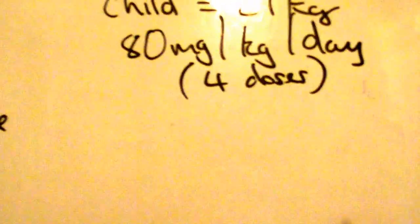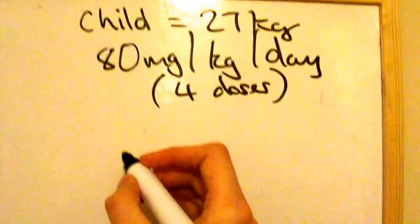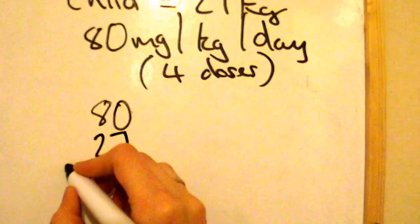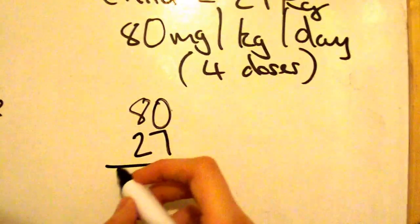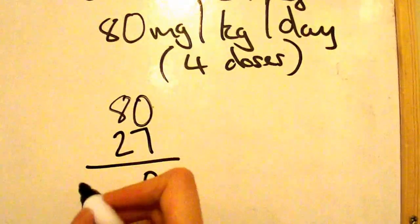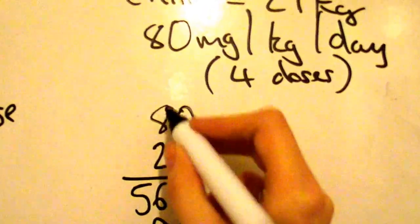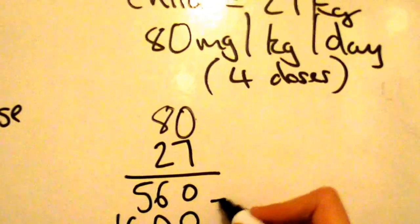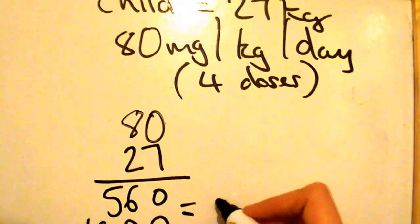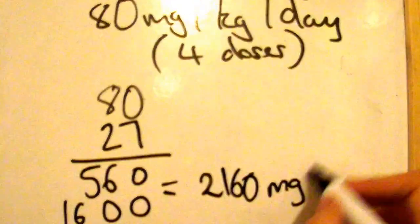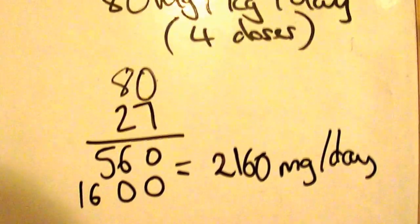So here you've got a child that's 27 kilograms, 80 milligrams per kilogram per day. Again in 4 doses. So here again, 80 times 27. So 7 times 0 is 0, 7 times 8 is 56. Then you're adding your 0 here. So you've got 2 times 0 is 0, 2 times 8 is 16. Then you're adding these numbers together which is 2160. So that is milligrams per day as we had in the other one.